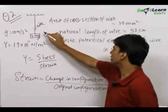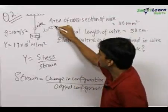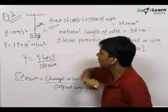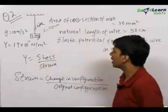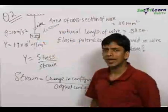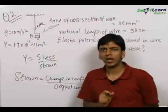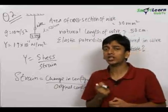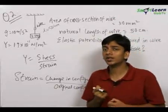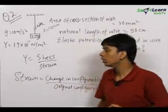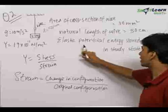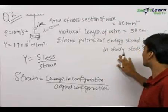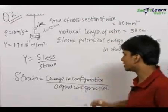The natural length initially was L = 50 cm. There will be some change in length of this wire, so the wire undergoes extension. When the wire undergoes extension, there is potential energy stored in the wire. We need to find out that elastic potential energy stored in the wire in steady state.